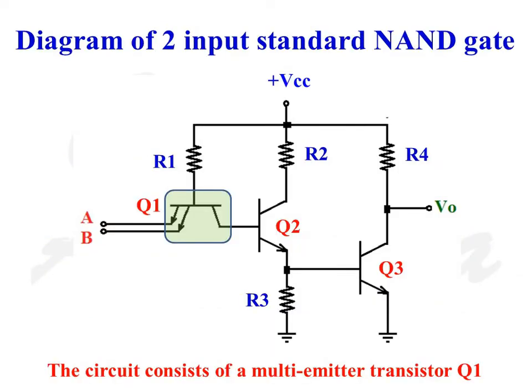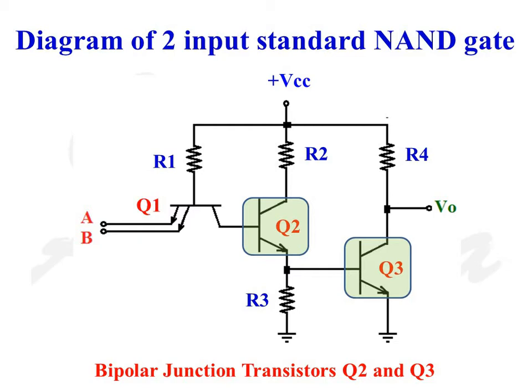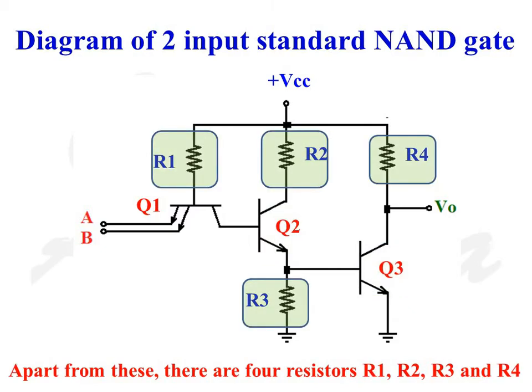This is the circuit diagram of a two-input TTL NAND gate. The circuit consists of a multi-emitter transistor Q1, bipolar junction transistors Q2 and Q3. Apart from these three transistors, the circuit also consists of four resistors R1, R2, R3, and R4. Supply voltage plus VCC provides necessary biasing for the transistors.